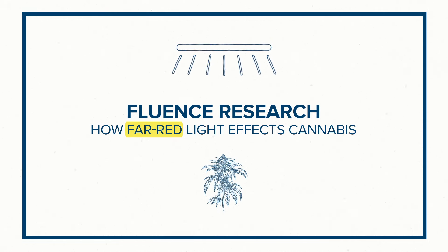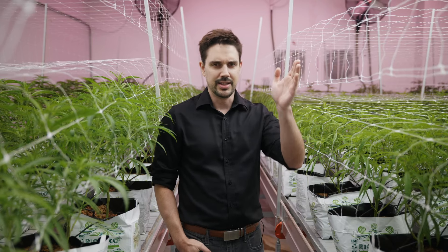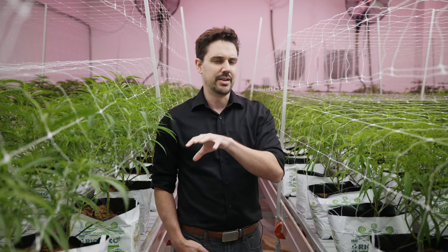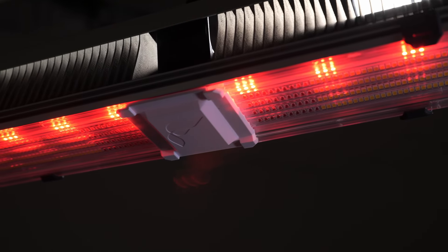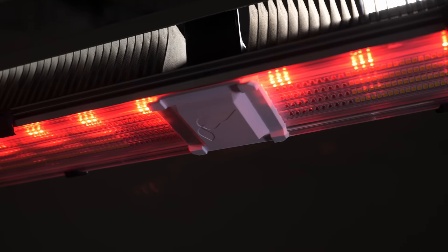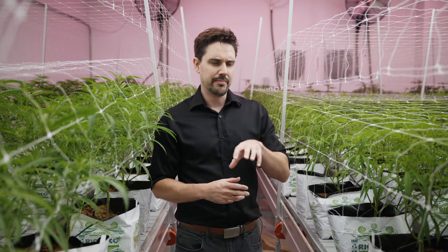What is far-red? Generally, when we talk about far-red, we're talking about wavelengths in the 700 nanometer to 800 nanometer range — just outside the range of visible light, which is typically 400 to 700 nanometers. Broadly speaking, far-red light makes plants think that they're in the shade.